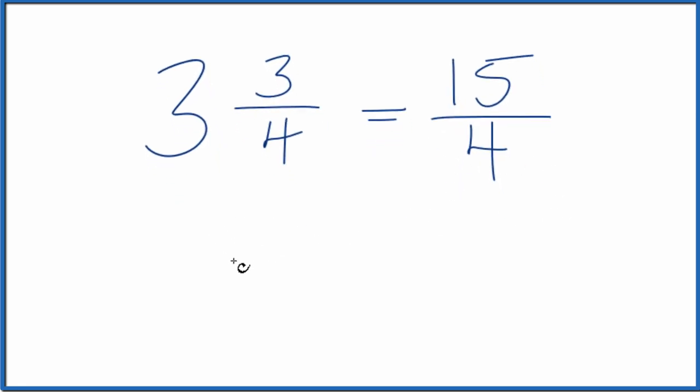And we can check our work. We could take the improper fraction 15 fourths and change that back to a mixed number. 4 goes into 15 three times. 3 times 4 is 12, with the 3 left over here.